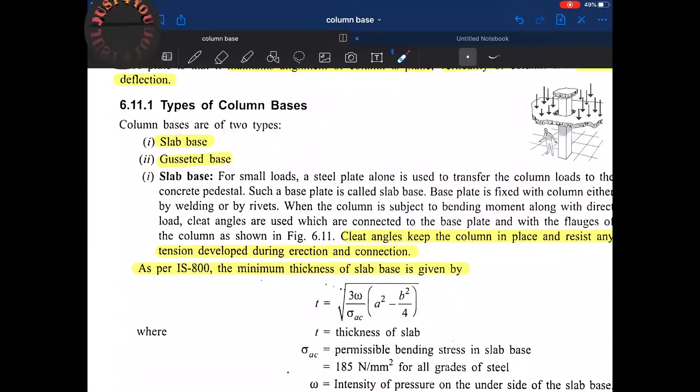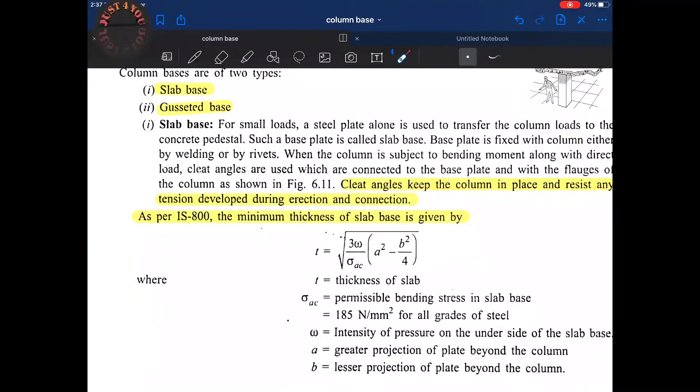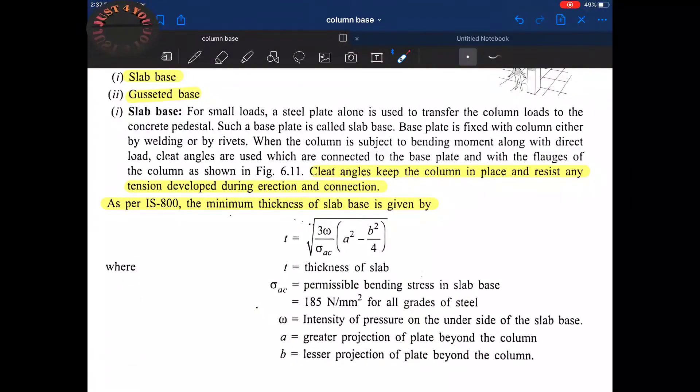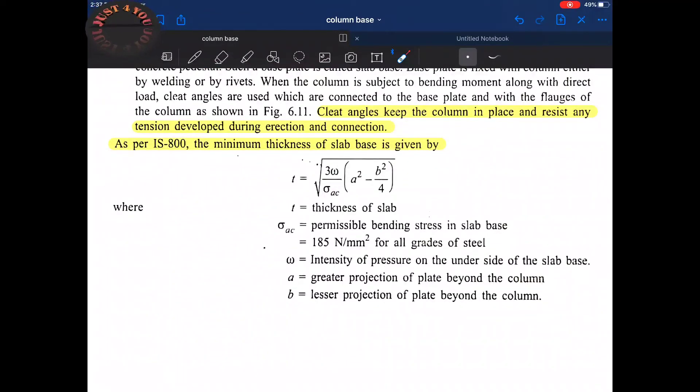Now we have to solve the numerical with the help of this formula. This is the formula for minimum thickness of slab as per IS 800. The formula is: t equals under root 3 omega under sigma AC, a squared minus b squared upon 4.